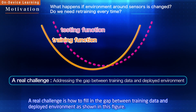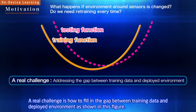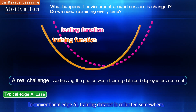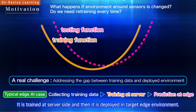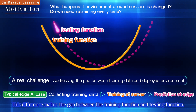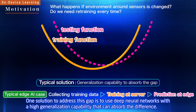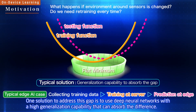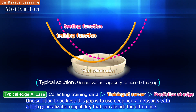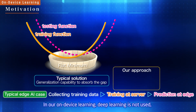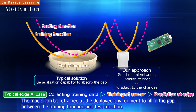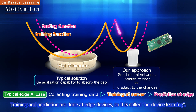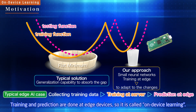A real challenge is how to fill the gap between training data and the deployed environment. In conventional Edge AI, a training dataset is collected somewhere, trained at the server side, and then deployed in the target edge environment. This difference creates a gap between the training function and testing function. One solution is to use deep neural networks with high generalization capability. In our on-device learning, deep learning is not used; instead, very small neural networks are used to reduce computation cost. The model can be retrained at the deployment environment to fill the gap, and training and prediction are done at edge devices — hence it is called on-device learning.